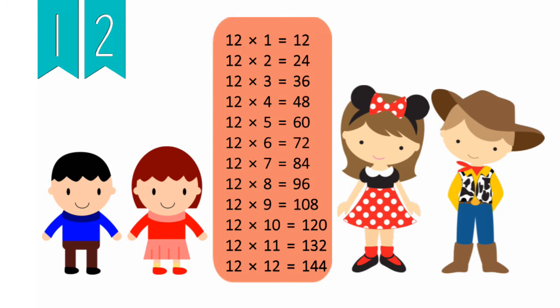12 times 1 equals 12, 12 times 2 equals 24, 12 times 3 equals 36, 12 times 4 equals 48, 12 times 5 equals 60, 12 times 6 equals 72, 12 times 7 equals 84, 12 times 8 equals 96, 12 times 9 equals 108, 12 times 10 equals 120, 12 times 11 equals 132, 12 times 12 equals 144.